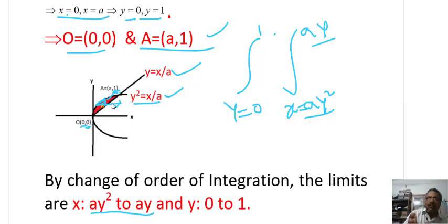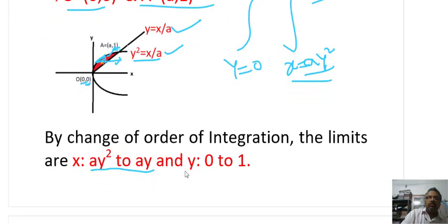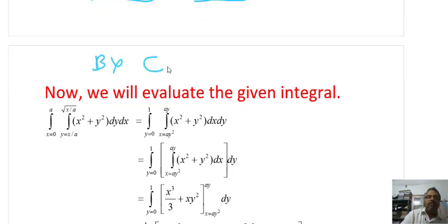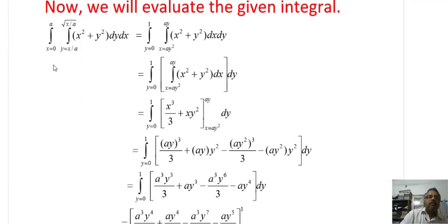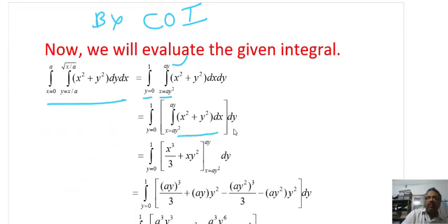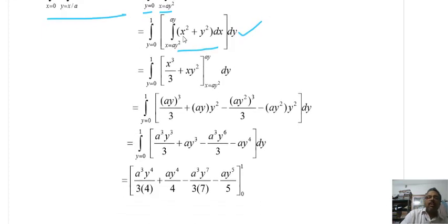Observing along the y-axis, y spans from 0 to 1. Now we evaluate by change of order of integration. The integral becomes: integral from y=0 to 1, integral from x=Ay² to Ay, of (x² + y²) dx dy. Integrating with respect to x: x³/3 for x², and xy² for y² (treating y² as constant). Apply limits x = Ay and x = Ay².